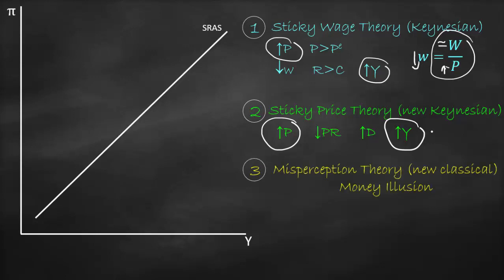The third theory is called the misperception theory, which is a new classical theory based on the money illusion. If prices increase, prices will be bigger than expected prices. Mistakenly — and that's why we call it misperception — we assume that because we have higher prices, we should produce more to make higher profit, so we increase output, giving us a positive relationship. However, what we didn't account for is that all our peers will increase their prices as well, so our relative price remains constant. That's why we shouldn't fall into this misperception.